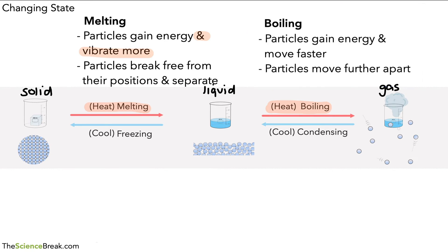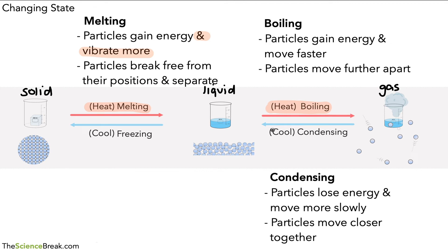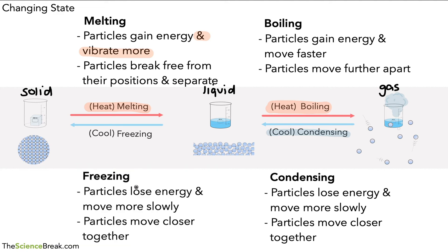During boiling, the particles gain even more kinetic energy, move faster, and move further apart — the liquid turns to gas. When we go from gas to liquid, we cool the gas; this is condensing. The particles lose energy, move more slowly, lose kinetic energy, and move closer together. When we go from liquid to solid, this is freezing — we cool the liquid, the particles lose energy, move more slowly, and move closer together to form the solid.